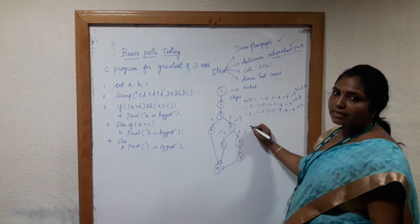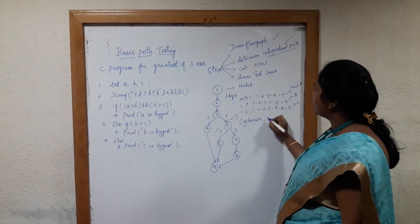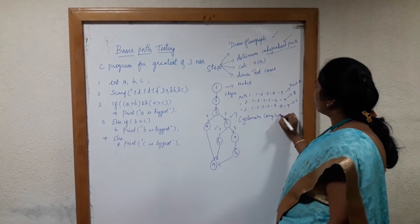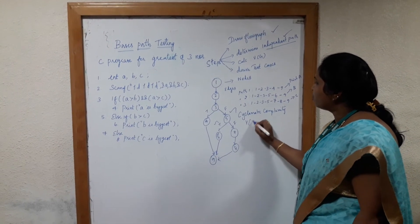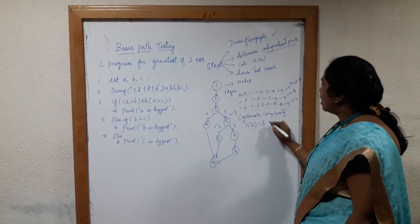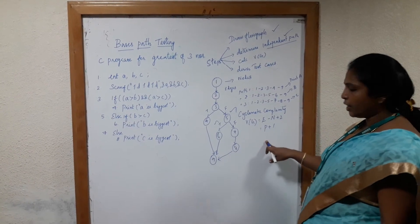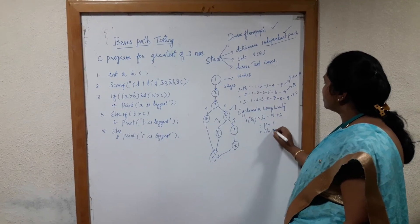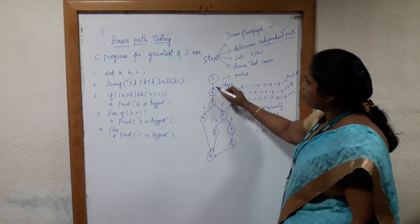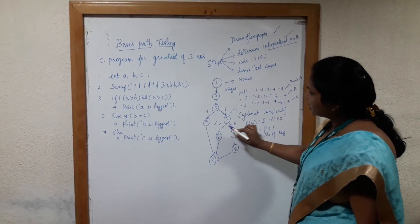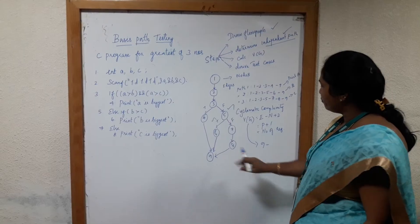The third step is to calculate the cyclomatic complexity, referred to as V(G). Cyclomatic complexity can be calculated using three formulas: V(G) = E minus N plus 2, or P plus 1, where P means predicate nodes, or by counting the number of regions. Edges means arrow marks — counting them gives 10 edges total.